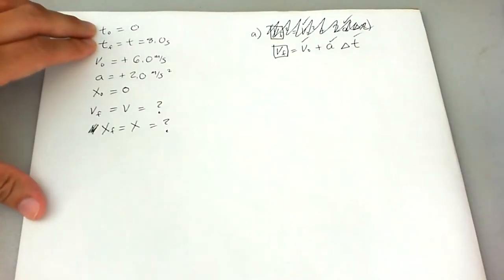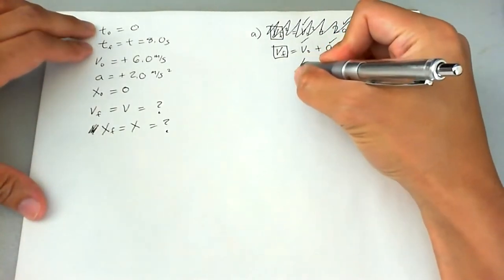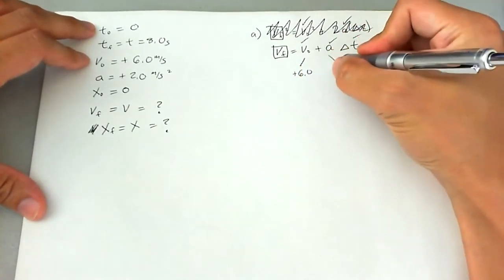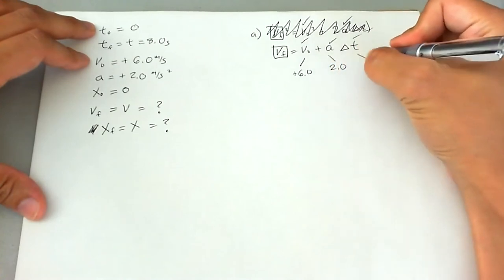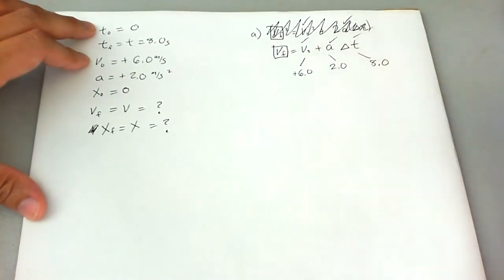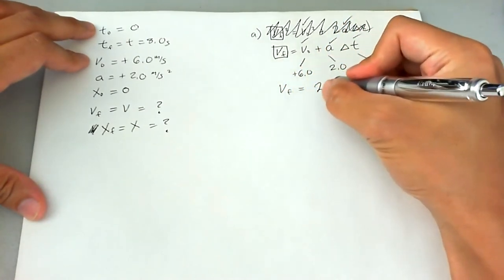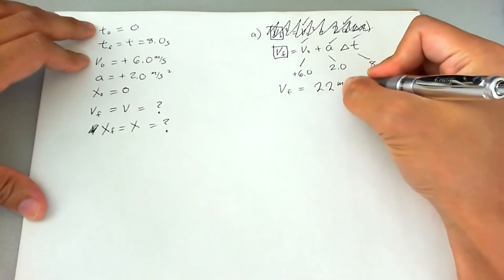All we got to do is plug and chug. So v naught is positive 6.0. I'm going to leave out the units for simplicity. a is going to be 2.0, and delta t is going to be 8.0. Plug it into the calculator, we get v final is going to be 22 meters per second.